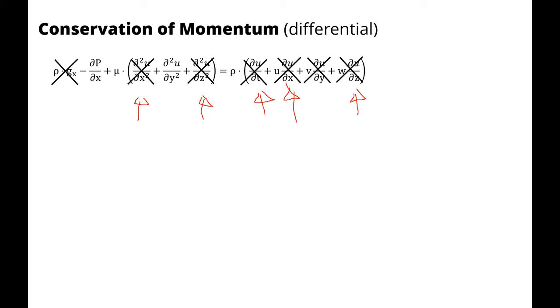And there is no y component of velocity. Therefore, everything simplifies except for the pressure gradient, the viscosity, and the second derivative of u with respect to y.